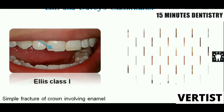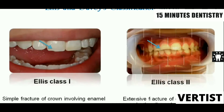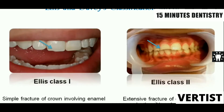LS class 1 is a simple fracture of the crown in which only the enamel is involved — you can see the blue arrow indicating that. LS class 2 is an extensive fracture of the crown involving the enamel and the dentine, but the pulp is not exposed. We examine it visually to confirm whether both enamel and dentine are involved in this fracture.